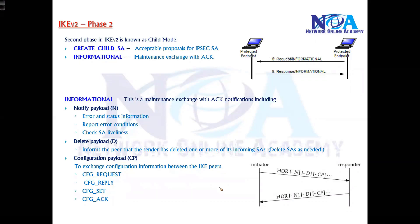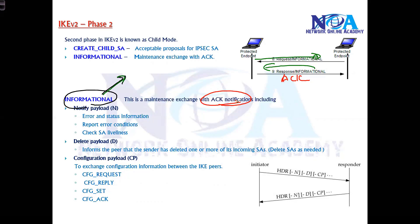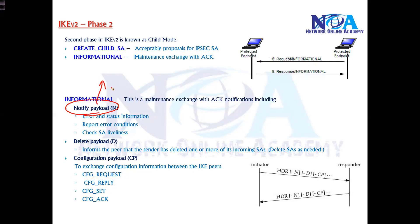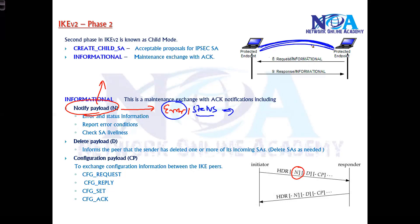Once the Child SA is created, additional informational messages may be exchanged depending on the status of the connectivity. These messages are used for maintaining the tunnel between the two endpoints. Each informational request sent by the initiator expects a response — essentially they are acknowledged. Some of these messages include notify messages, typically labeled 'N', which carry error information or status information such as connected or not connected. These messages are also used to check the liveliness of the peer — whether the peer is live or not.